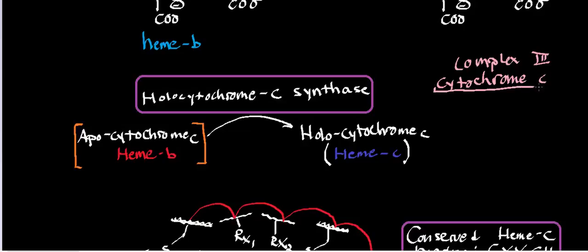Cytochrome C is a soluble protein, and it's going to pick up electrons from complex 3 — cytochrome C ubiquinol oxidoreductase — and transfer electrons one at a time to cytochrome C oxidase. This protein exists in the inner membrane space of the mitochondria. What we're going to do in this video is look at the synthesis of cytochrome C.